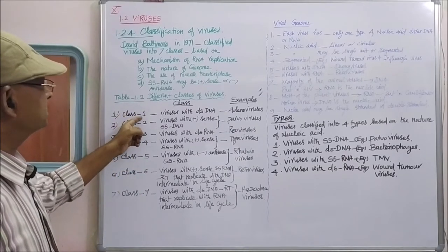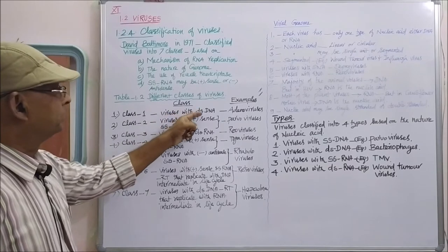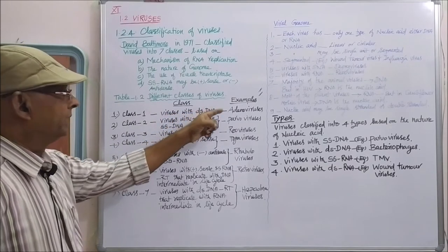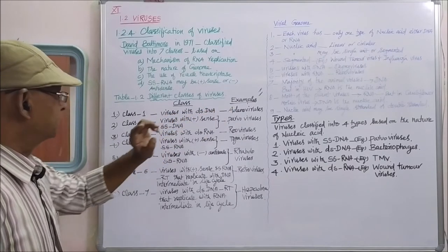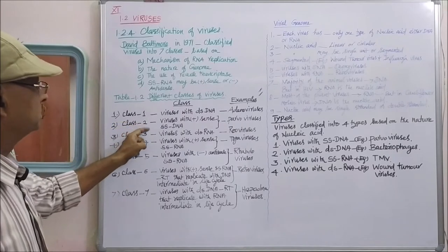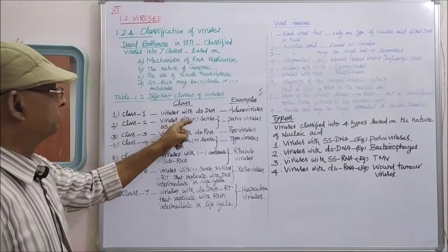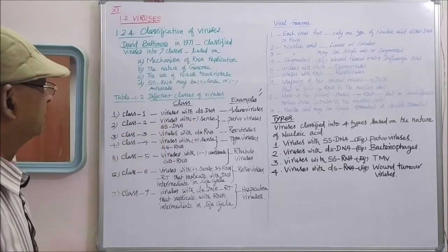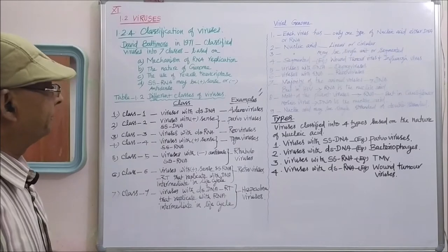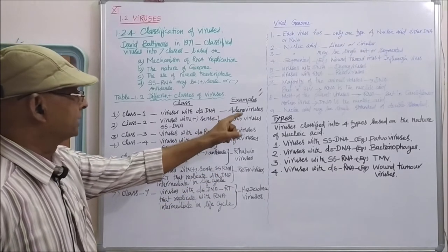Class one: viruses with double-stranded DNA. Example: adenoviruses. Class two: viruses with plus-sense single-stranded DNA. Example: parvoviruses.